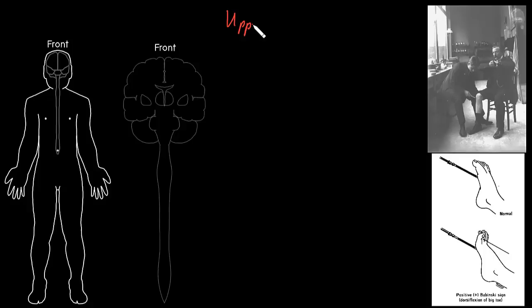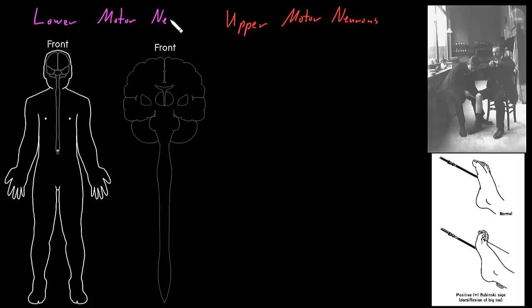In this video, I'm going to talk about upper motor neurons. Upper motor neurons are different from the motor neurons we talked about before, which are the lower motor neurons.